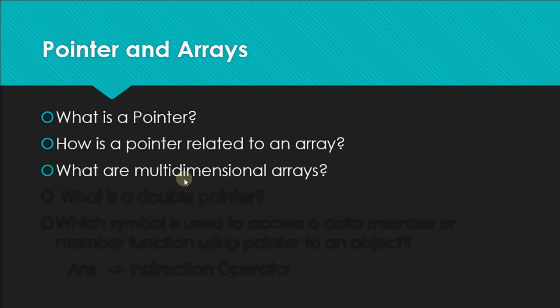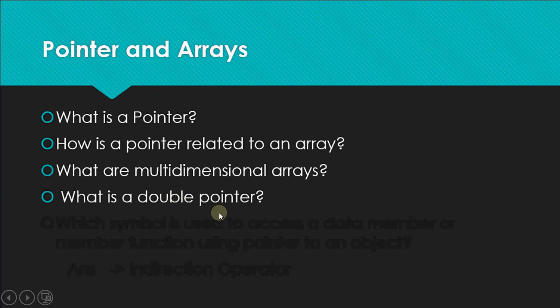What is a double pointer? When we have a pointer and take another pointer by putting double star (** ), it means this pointer is not going to store the address of a variable, but rather the address of another pointer. With triple star (***), it would be a triple pointer storing the address of a double pointer. As you increase the number of stars, the level of the pointer increases, but you only need to know about double pointers for this exam.